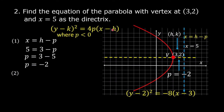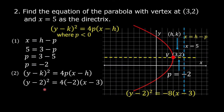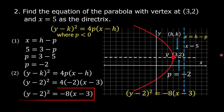Next, copy the equation of the parabola: (y - k)² = 4p(x - h). Substitute k = 2, p = -2, and h = 3. We get (y - 2)² = 4(-2)(x - 3), which simplifies to (y - 2)² = -8(x - 3). This is the equation of the parabola with vertex at point (3, 2) and directrix x = 5.